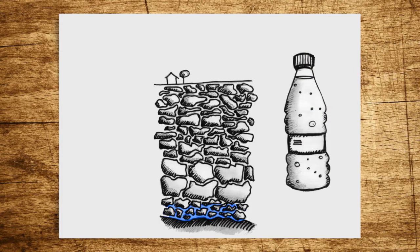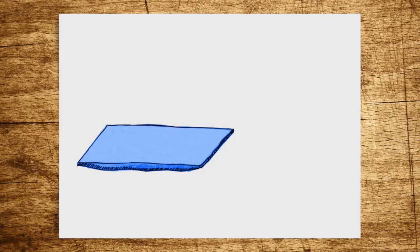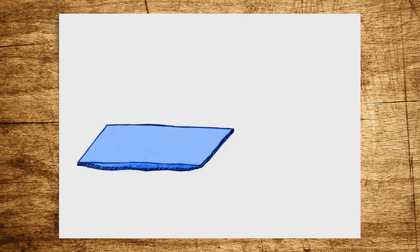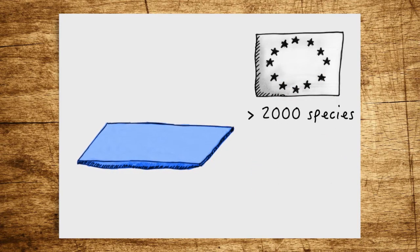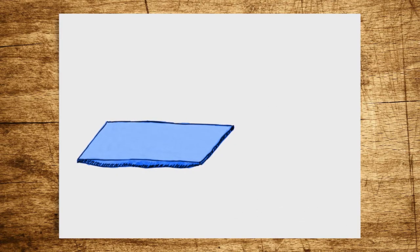Anyone who believes that groundwater only consists of dead matter is wrong. Although it is low in nutrients, cold and dark, it is considered to be one of the largest continental habitats in the world. In Europe, we know of more than 2,000 species that live in groundwater. In Germany, more than 500 of them are found.